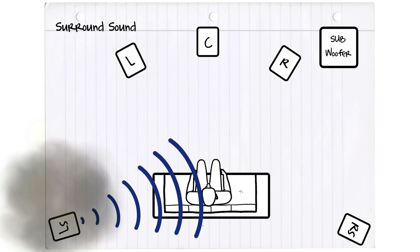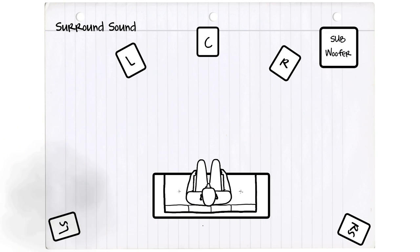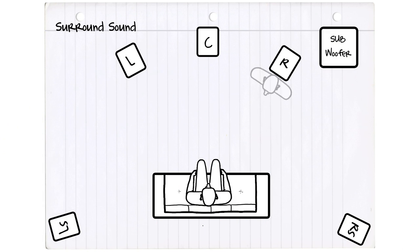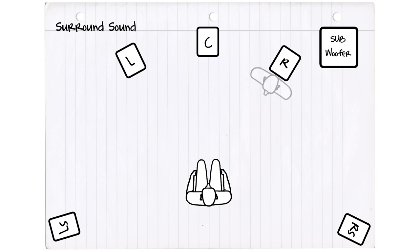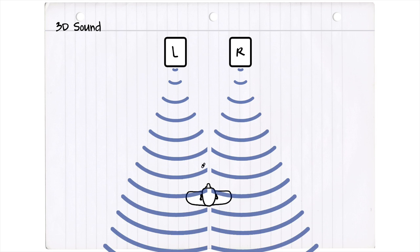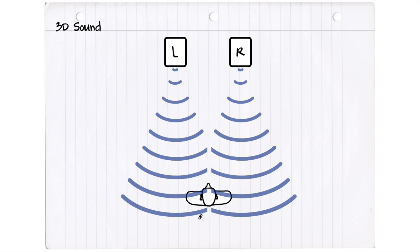For example, if you want to portray somebody walking to the listener and whispering in your ear, you can never do that with surround sound because the sound is always at the speakers. But with 3D audio, I can get a fly to circle your head from two loudspeakers.